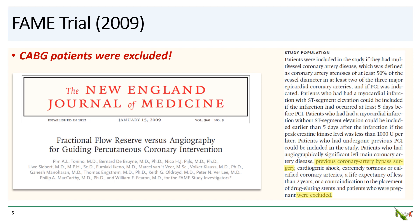That's because if you look back at the original FAME trial for FFR, patients with prior CABG were excluded. So although it is commonly done, an FFR of 0.8 cannot actually be used as a threshold to guide PCI in saphenous vein grafts. The FAME trial results cannot be directly applied to CABG patients.